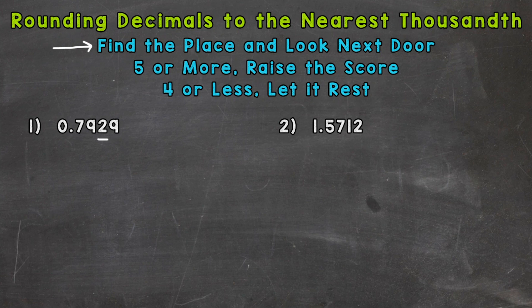We need to look next door now and it's always going to be to the right. So that digit to the right is either going to be five or more and we raise the score which means round up, or is that digit going to be four or less and we let it rest. Well in this case we have a 9 so that's five or more and we need to round up. So our rounded answer is going to be 0.793.